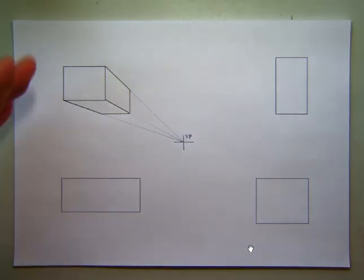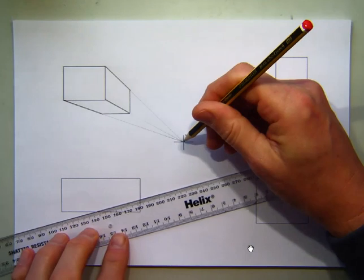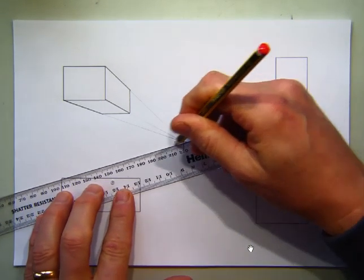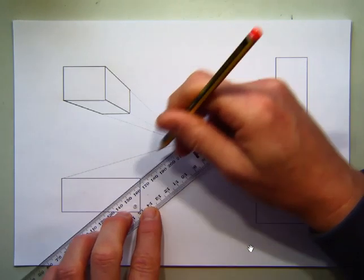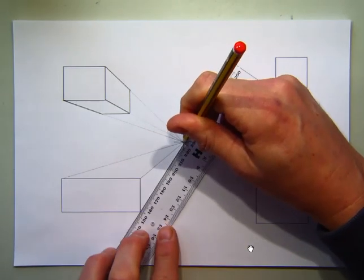Because this one is in the top left corner, you see the front, you see the right, and you see the bottom. This one down here, because it's down in the bottom left, I'm going to see the front of it, I'm going to see the top, and I'm going to see the right. But the same principles apply: take each of the corners back to the vanishing point.